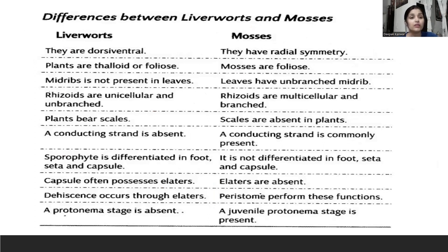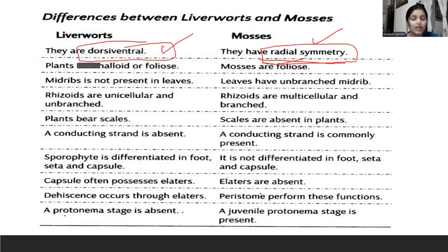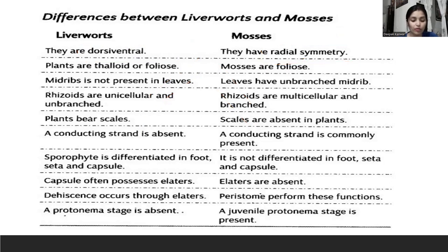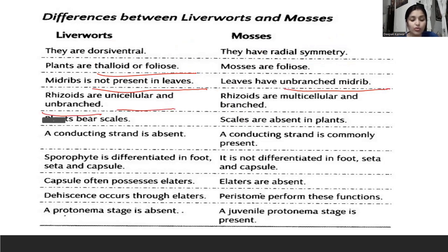The difference you can see on the screen is very important. Liverworts have dorsiventral symmetry, while mosses have radial symmetry. Radial symmetry means that however you cut it, the symmetry remains the same. In liverworts, the thallus is thallose or foliose. In the midrib area, there are no leaves, and the leaves are unbranched. Rhizoids in liverworts are unicellular and unbranched, while in mosses they are multicellular. Scales are present in liverworts.